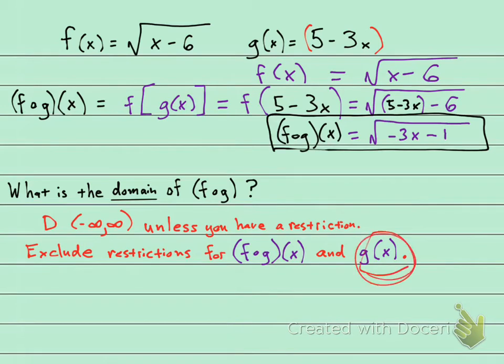So first let's look at just the g of x. Let's look for any restrictions. Here is the g of x, I'm putting in green, and you see it's 5 minus 3x. There are no exclusions there. There's no x's in the denominator, there's no x's under a radical, so I can plug in any number I want for x. There's no exclusions in this case for g of x.